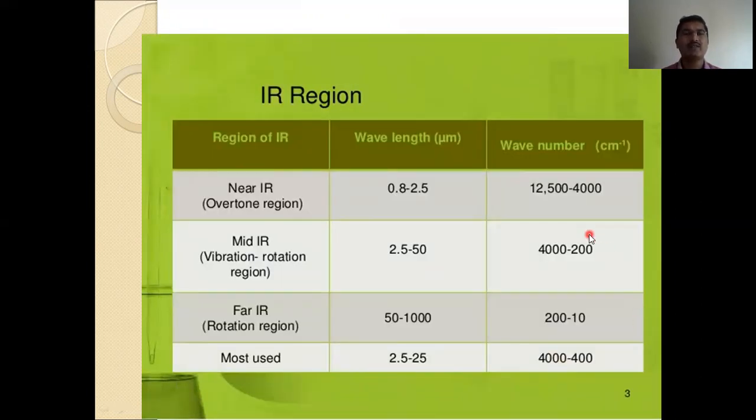This is the region of different types of IR. The near IR or overtone region wavelength is 0.8 to 2.5, wave number 12,500 to 4,000. Mid IR, vibrational and rotational region, wavelength is 2.5 to 50 and wave number is 4,000 to 200. Far IR, rotational region, wavelength is 50 to 1,000 and wave number is 200 to 10. Mostly, we have used the wavelength 2.5 to 25 and wave number 400 to 4,000.